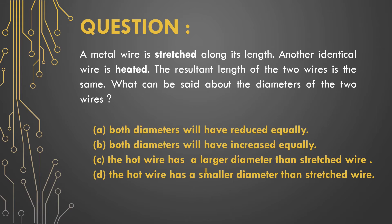A. Both diameters will have reduced equally. B. Both diameters will have increased equally. C. The hot wire has a larger diameter than the stretched wire. D. The hot wire has a smaller diameter than the stretched wire.